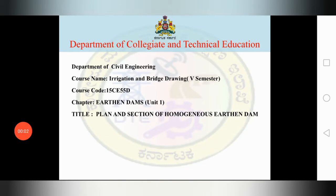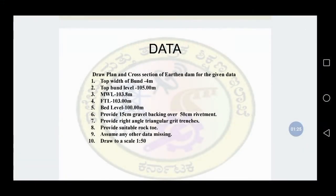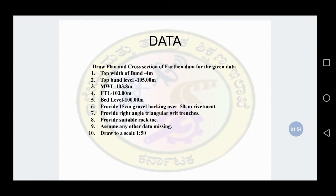Dear students, welcome to Session 2 on Irrigation Bridge Drawing, Unit 1. In this session we will discuss how to draw plan and section of a homogeneous earthen dam. The data given is as follows: top width of the bund is 4 meters, top bund level is 105 meters, MWL is 103.8 meters, FTL is 103 meters, and bed level is 100 meters.